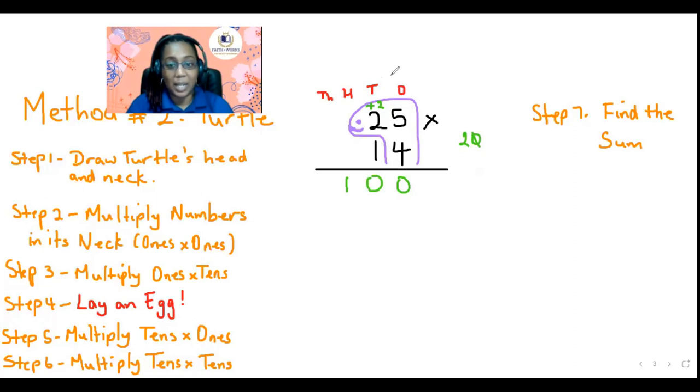Next step, number 4. We're going to lay an egg. So what does that mean? We're making a little Easter egg here. We're laying an egg. So this egg represents 0. So let's go to the next step. We're multiplying the 10s by the ones. So 1 ten by 5 ones. 1 by 5 is 5. Then step number 6, we're multiplying 10s by 10. So 1 ten by 2 tens. 1 by 2 is 2. And step number 6, we find the sum.